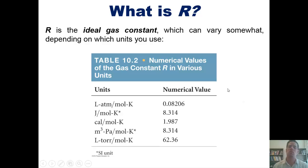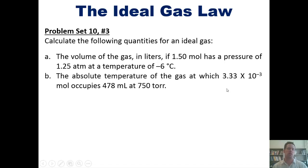That takes us to some ideal gas law problems. I want you to calculate the following quantities for an ideal gas: its volume in liters, if 1.5 moles has a pressure of 1.25 atmospheres at a temperature of negative 6 degrees Celsius. Then, the absolute temperature of the gas, at which 3.33 times 10 to the negative third moles occupies 478 milliliters at 750 torr.